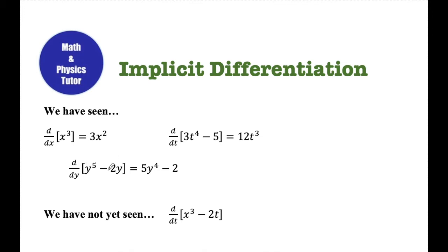What we haven't seen yet is the derivative in respect to one variable when there's multiple variables in the expression itself. So what's going on when you take the derivative in respect to some variable? You always end up with d that variable dx once you take that derivative. So once I take the derivative of x cubed using the power rule and I get 3x squared, there's really a dx/dx here. But dx divided by dx is just 1, so we don't waste our time writing that.